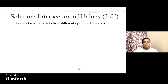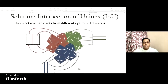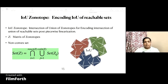To address the issue of having to choose from multiple division vectors for different objective functions, we propose a solution that incorporates different types of divisions instead of taking a single type. Our idea is to intersect the reachable sets from different optimized divisions. We compute the forward reachable set through piecewise linearizations corresponding to different optimized divisions, then intersect the resulting reachable sets to get an intersection of unions. If the reachable sets are encoded by zonotopes, we get an intersection of unions of zonotopes approximation of the reachable set.